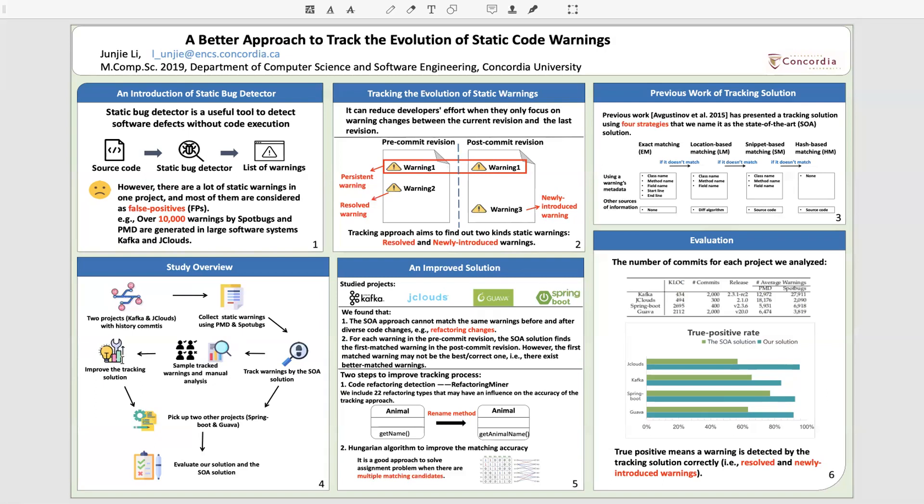Then we proposed a better approach and we also picked up two new projects to independently evaluate our improved approach and to what extent our approach outperforms the state-of-the-art approach. Through an analysis of 1,715 static code warnings from four large open-source projects...